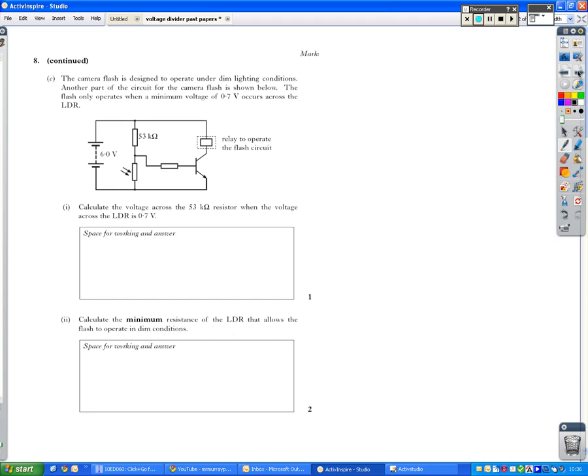So the camera flash is designed to operate under dim lighting conditions. So we're involving light now, so we're looking at an LDR, which is an input sensor. Another part of the circuit for the camera flash is shown below. The flash only operates when a minimum voltage of 0.7 occurs across the LDR. So remember, it's this little voltage across here, at the bottom part of this voltage divider, that determines whether this transistor switch is on. So it must be 0.7 down here.